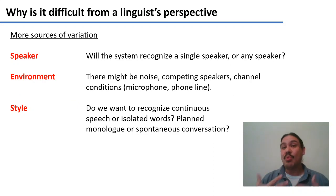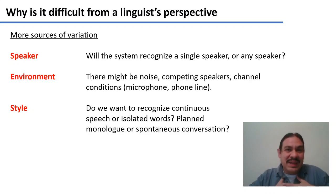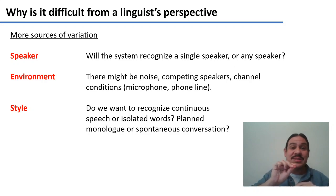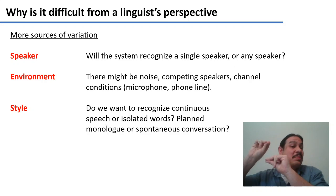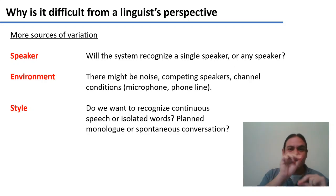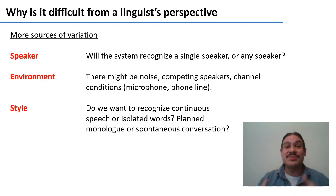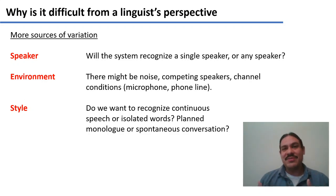There's more variation we can only mention briefly. Every individual speaker speaks with a different pitch, so we can't say a vowel goes from one fixed frequency to another — that range will be very low for a baritone voice and very high for a higher-pitched speaker. The system has to learn relationships between values, not absolute values. In the 1980s, the first speech recognition systems could only recognize one person, because it's easier to learn one person's patterns than every speaker of English.